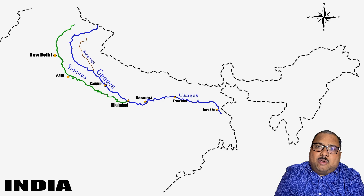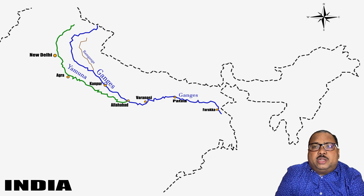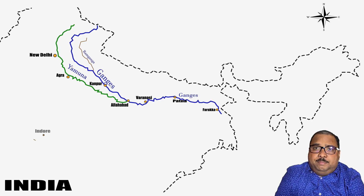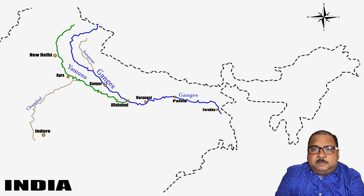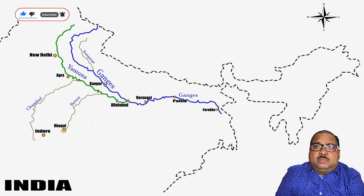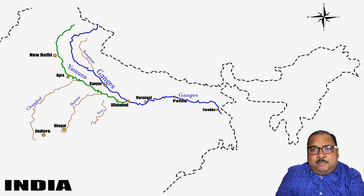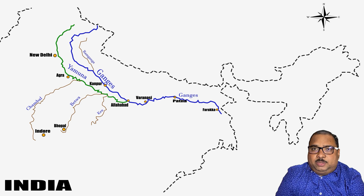The three famous tributaries of Yamuna are Chambal, Betwa and Ken. All three rivers originate from Madhya Pradesh. Chambal originates from the Vindhya Ranges, and Ken river originates from the Kaimur Ranges. All these three rivers originate from the state of Madhya Pradesh and then meet Ganga in the state of Uttar Pradesh.